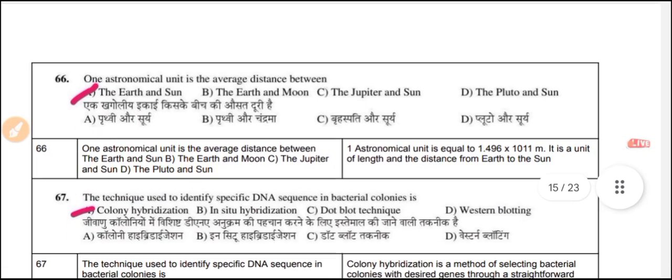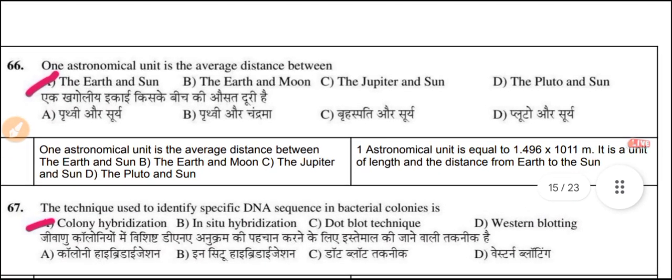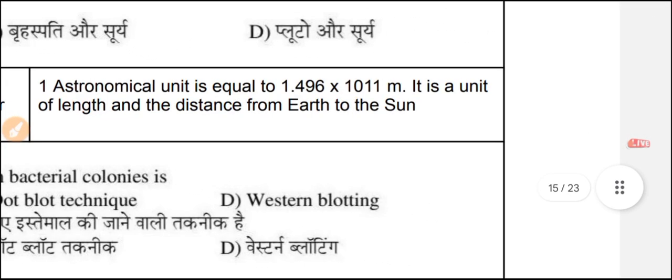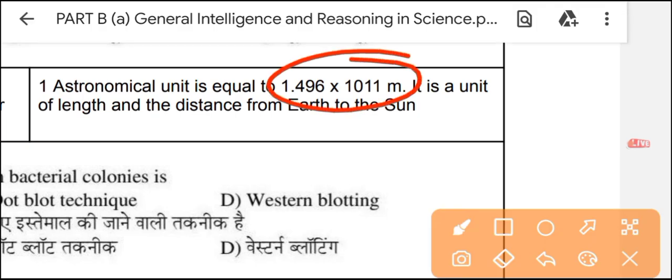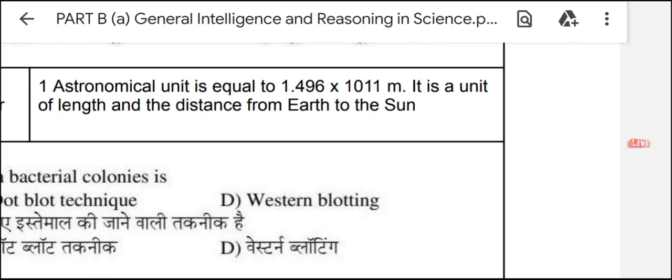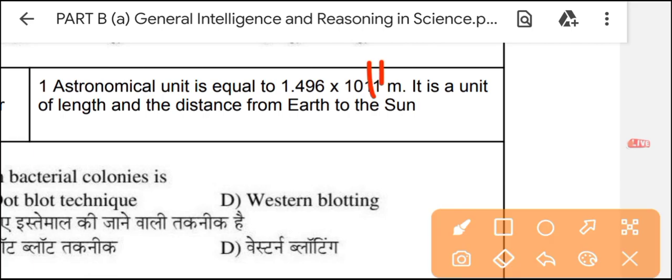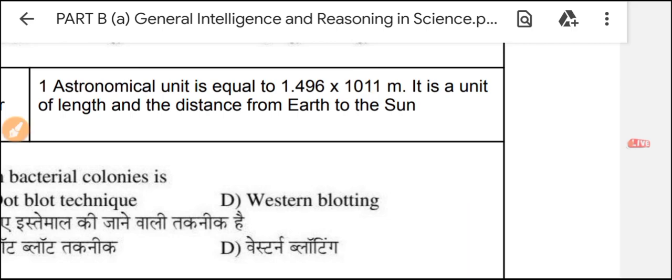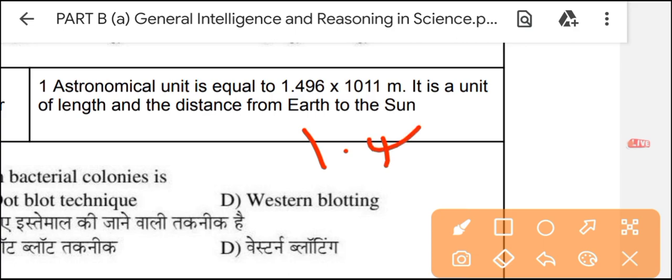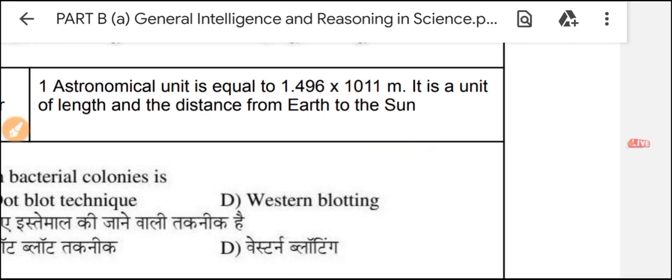Question 66: One astronomical unit is the average distance between the Earth and the Sun. One astronomical unit is equal to 1.496 × 10¹¹ meters. It is a unit of length representing the distance between the Earth and the Sun.